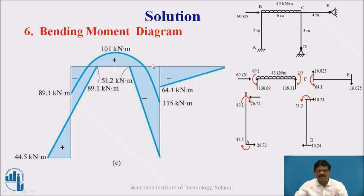For member CE, the negative moment is produced here. This is hogging, and here also the tension is outside, therefore it is minus. Then it is 0 at D and the moment is 0 at E. In this way we will consider the bending moment diagram.